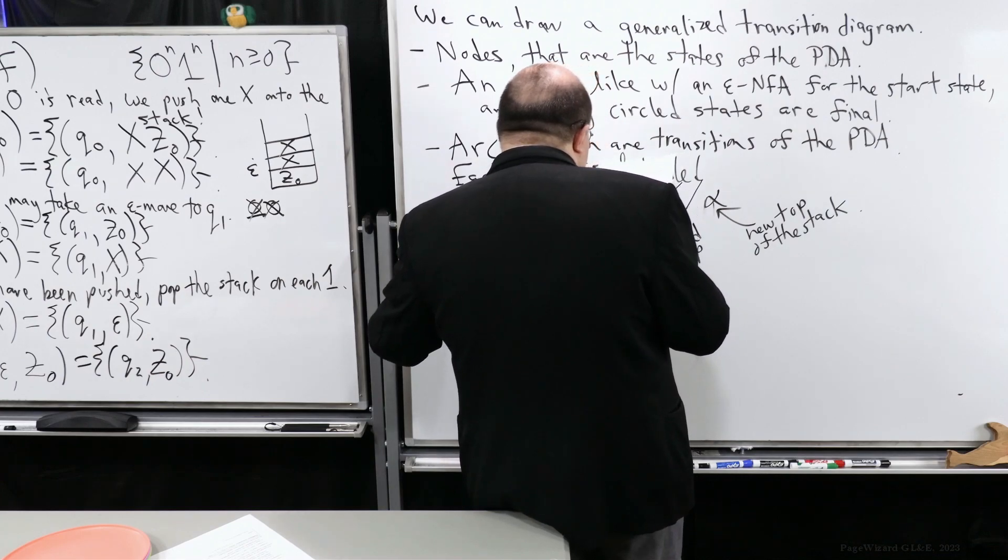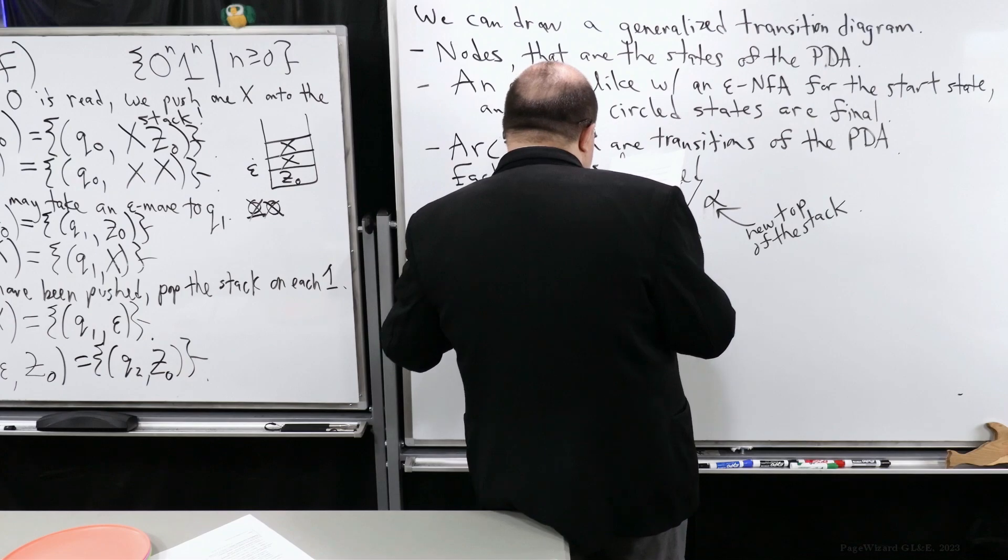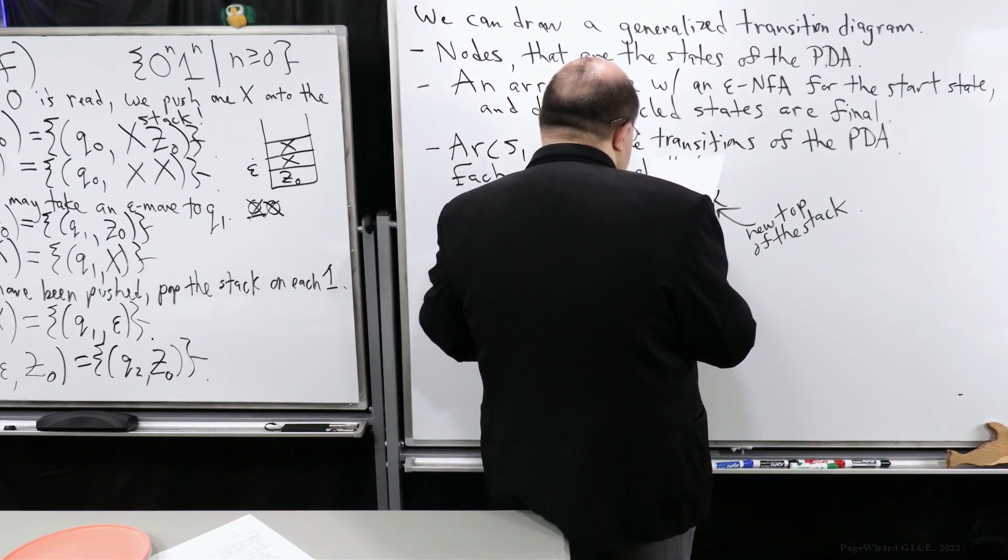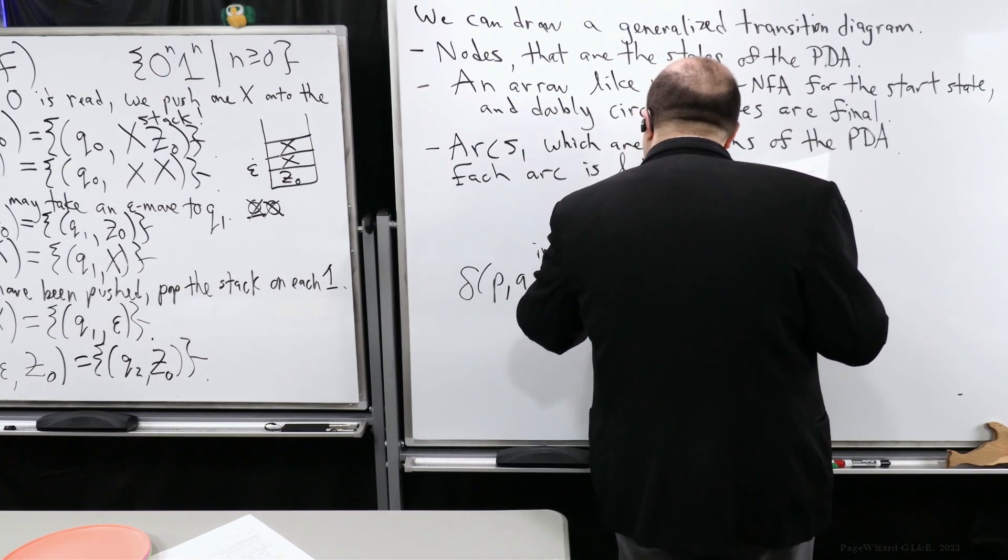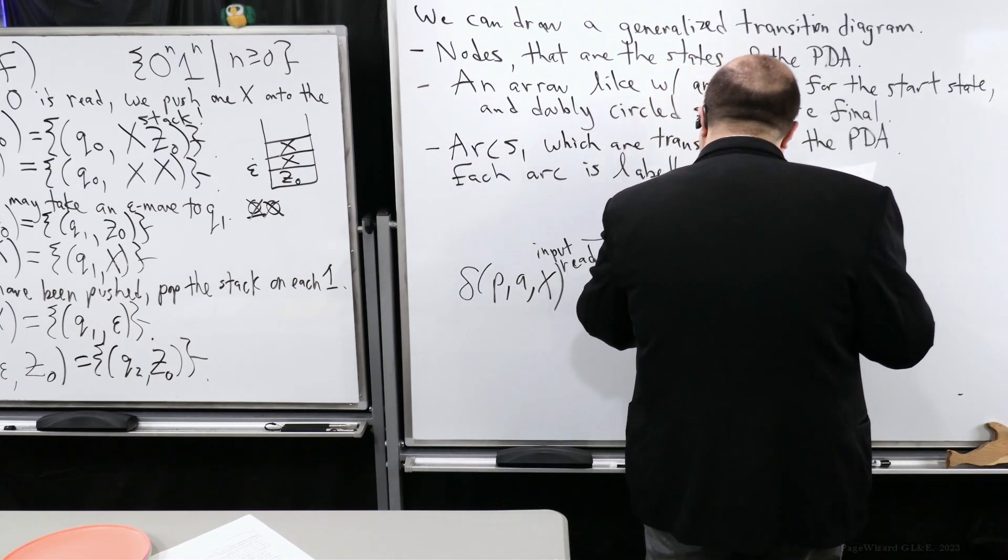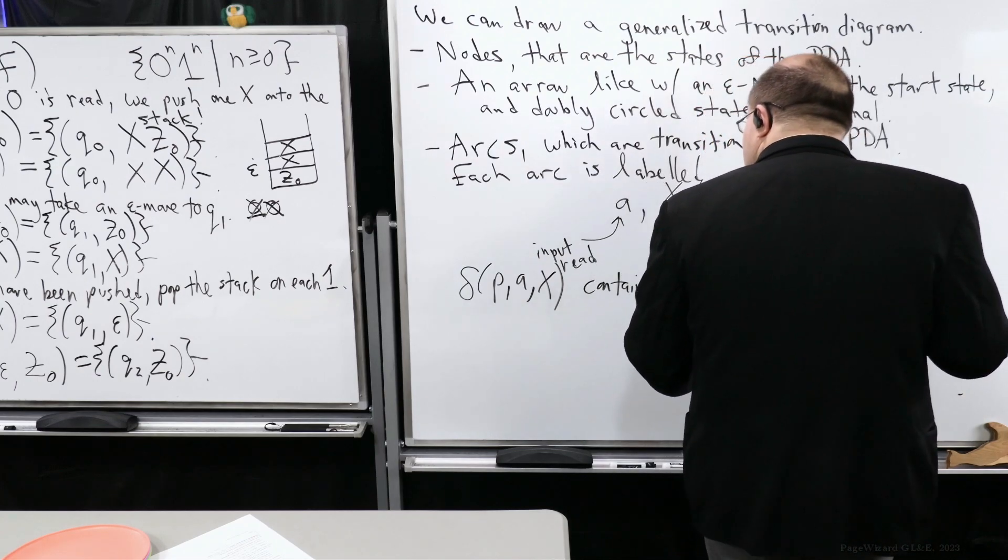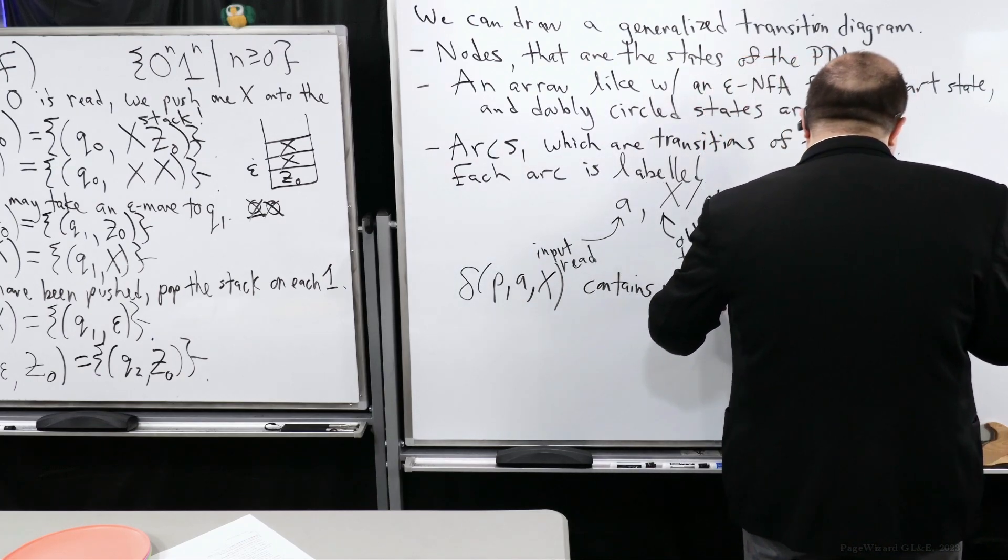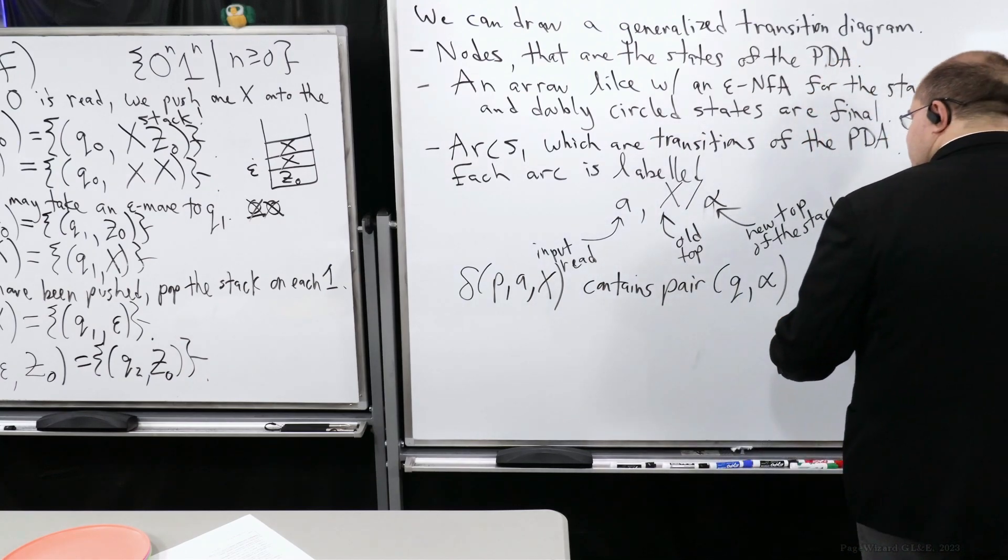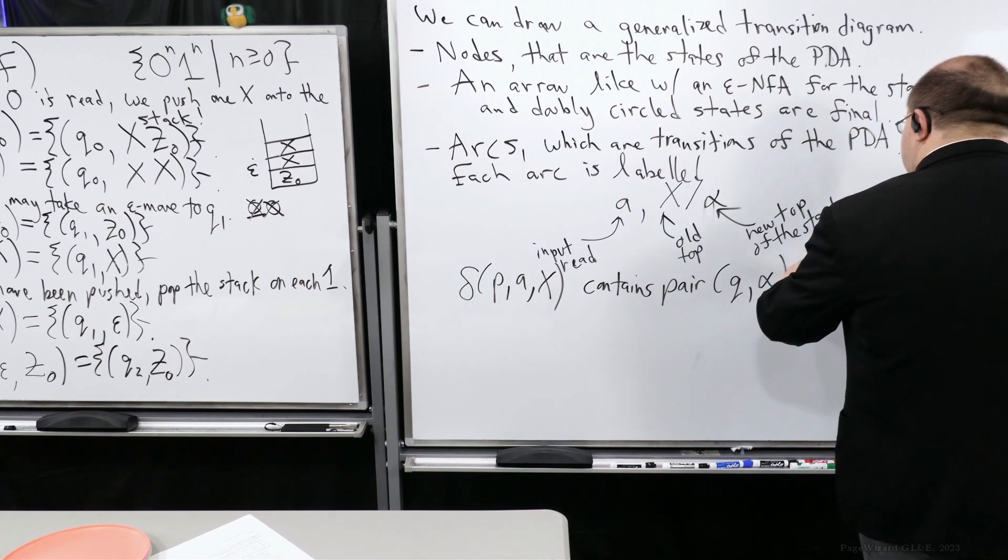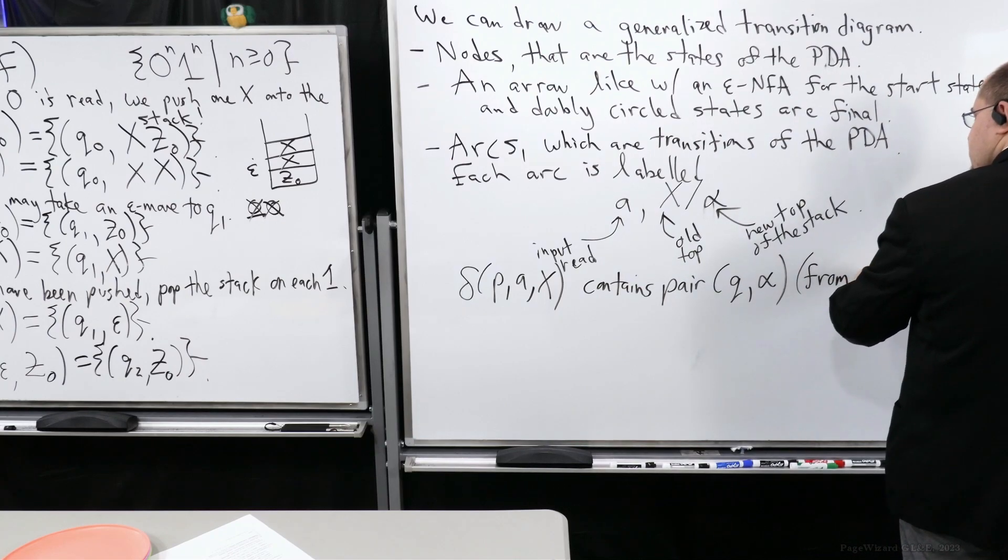So just to be very clear, what I mean by this is that if you see something like this, delta P A X, it contains pair Q alpha. And this is where if you're going from state P to state Q.